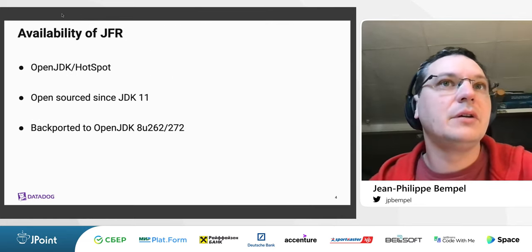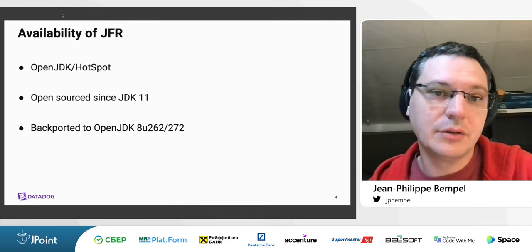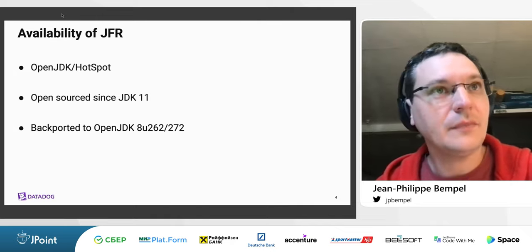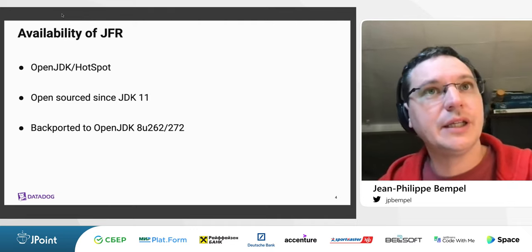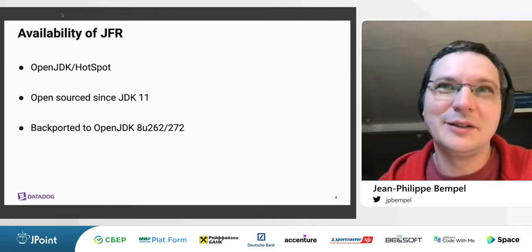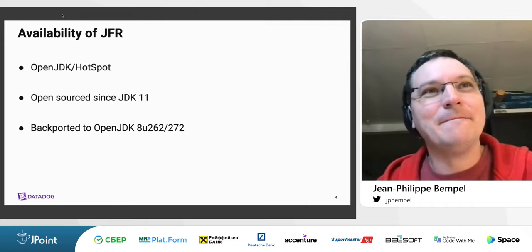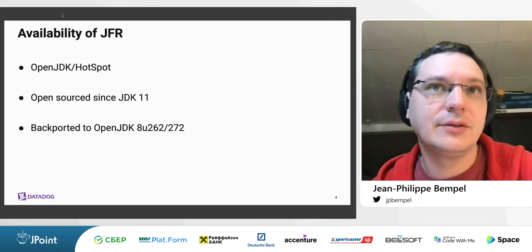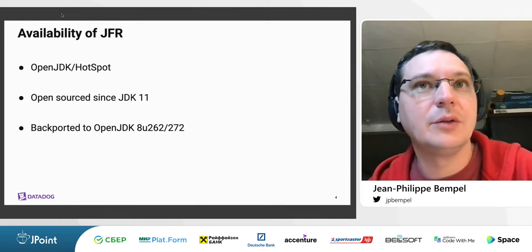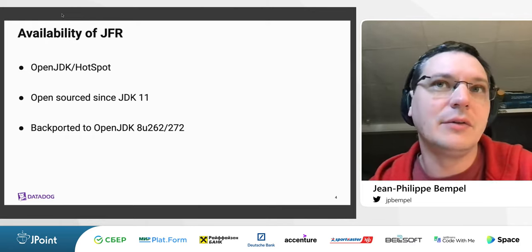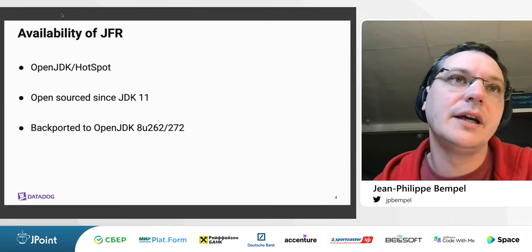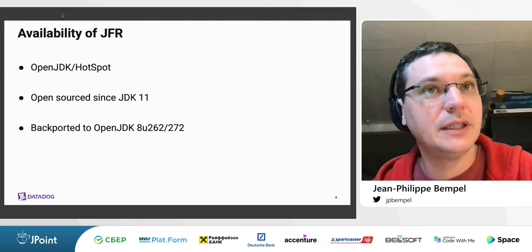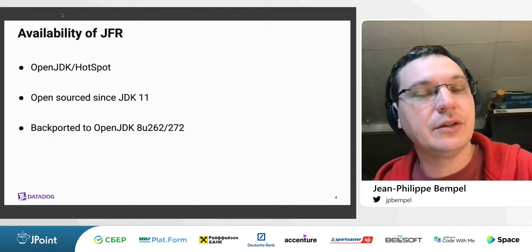JFR technology is only available on the HotSpot JVM. It was used in the commercial Oracle JDK but was open-sourced with OpenJDK 11. It was also backported to JDK 8 since obviously a lot of people are still using it. JFR is available since JDK 8 update 262 for most vendors like Azul, AdoptOpenJDK, Adoptium, BellSoft, and Red Hat, but JDK 8 update 272 for upstream builds as used in the official OpenJDK Docker image.